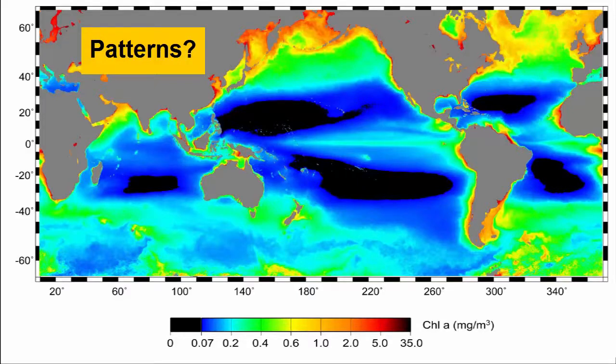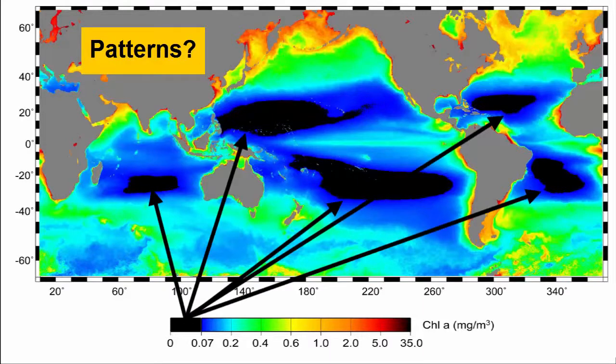In the global chlorophyll map we see large dark areas in the centers of the northern and southern Atlantic, northern and southern Pacific, and Indian oceans where there appears to be no chlorophyll.